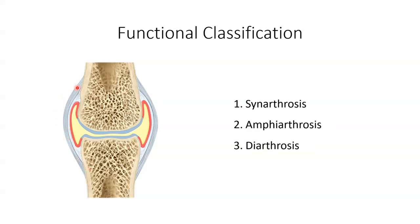The functional classification of joints relates to the degree of movement that that joint permits. Functionally, joints are also classified as one of three types. We have a synarthrosis, which is a joint that is immovable; an amphiarthrosis, which is a joint that is slightly movable; and a diarthrosis, which is a joint that is freely movable.